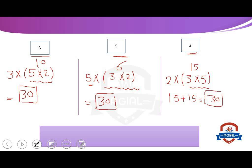So, we can write: 3 multiply 5 by 2 equals 5 multiply 3 by 2 equals 2 multiply 3 by 5. We can start by any number when we multiply 3 numbers.